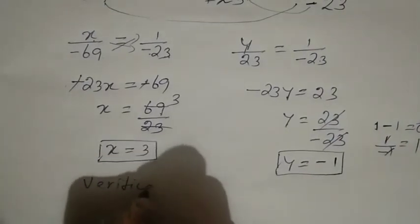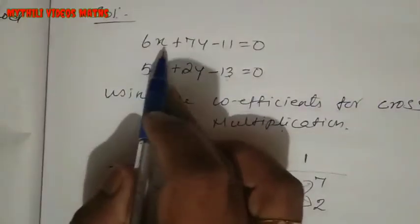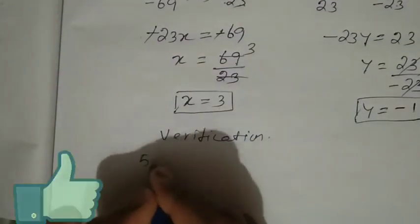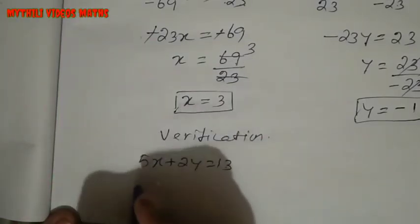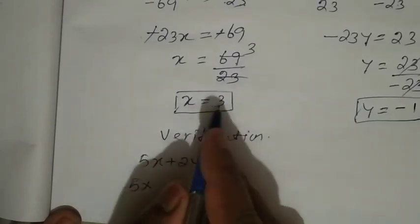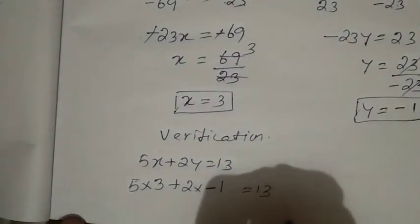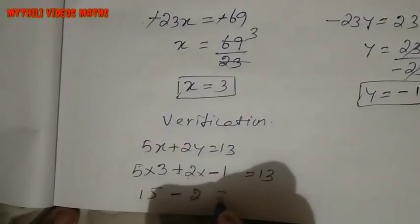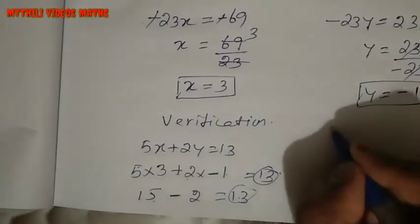Verification: take any one equation. The second equation 5x plus 2y equals 13 is easier. Substitute x equals 3 and y equals minus 1: 5 into 3 plus 2 into minus 1 equals 15 minus 2, which equals 13. So 13 equals 13, and our answer is verified as correct.